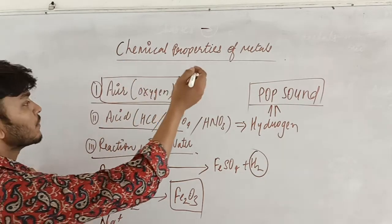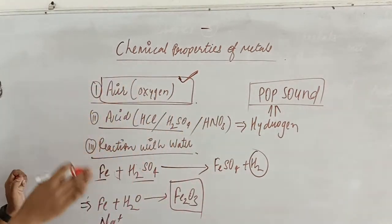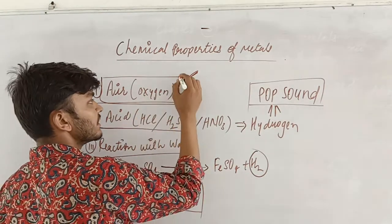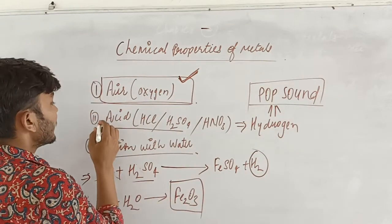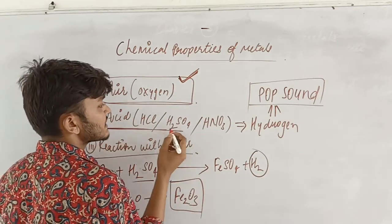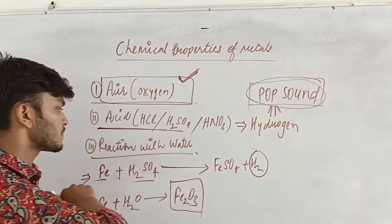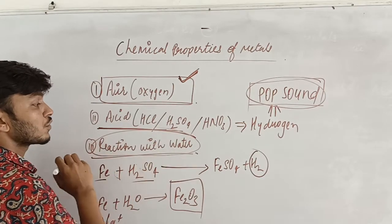That's all about the chemical properties. Today we talked about chemical properties of metals. Non-metals' chemical properties are less reactive. When metals react with acid, hydrogen gas is produced with a pop sound. Non-metals are less reactive.